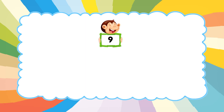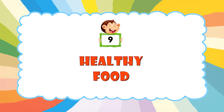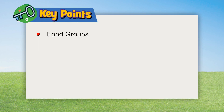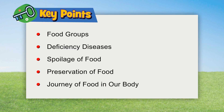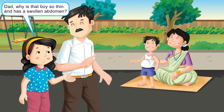Chapter 9: Healthy Food. Key points: Food Groups, Deficiency Diseases, Spoilage of Food, Preservation of Food, and Journey of Food in Our Body.